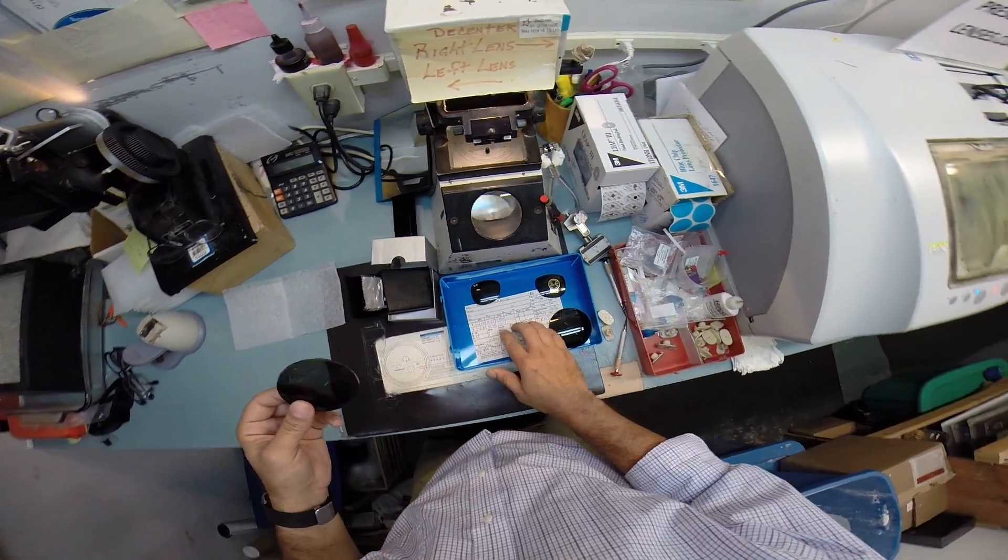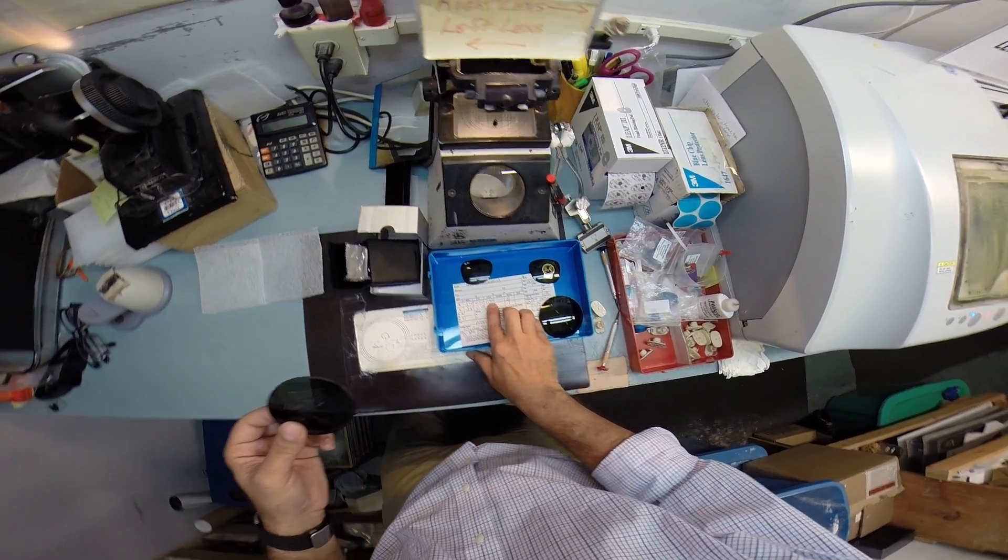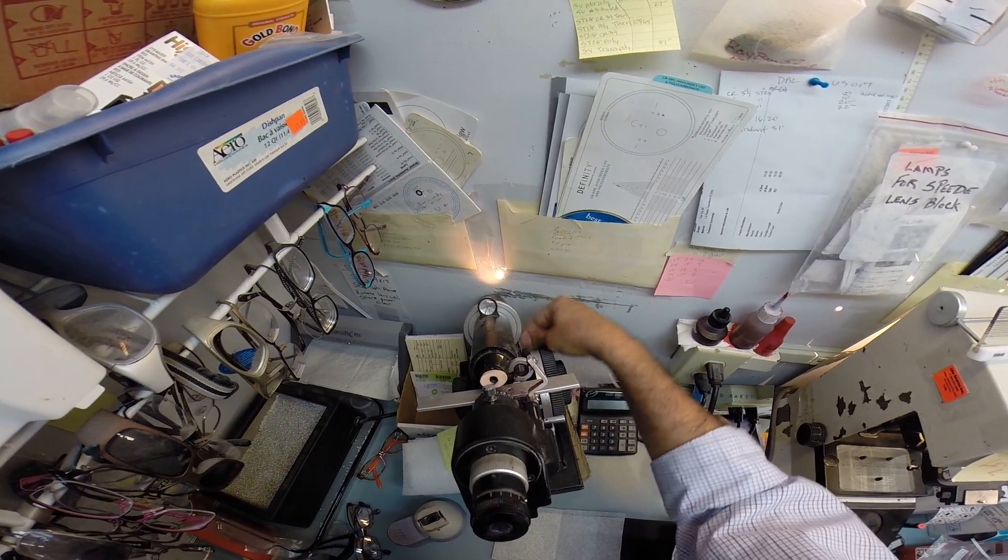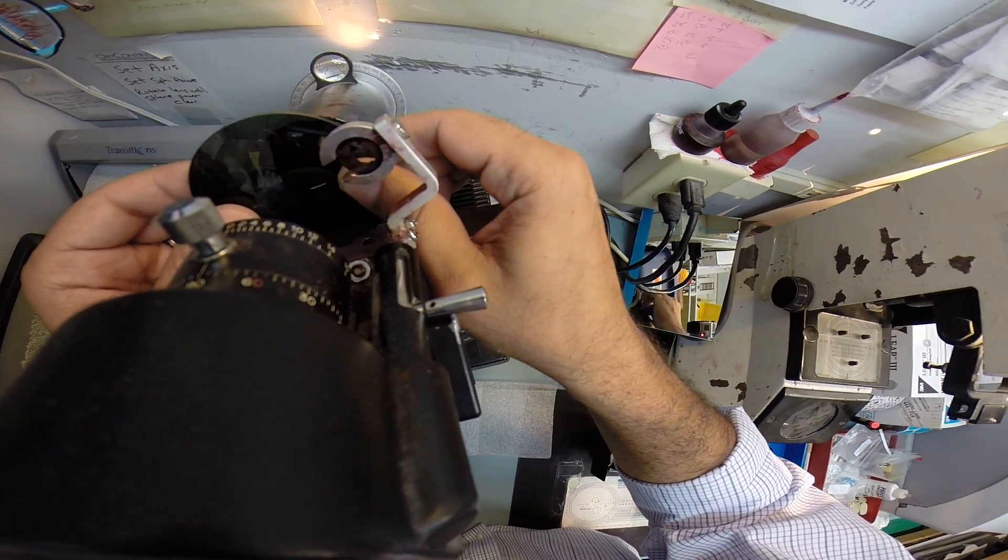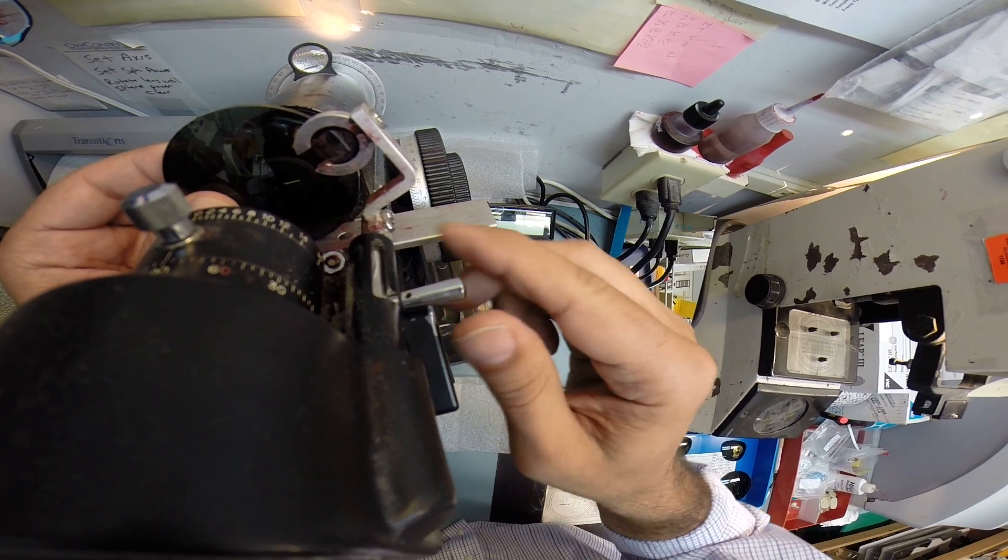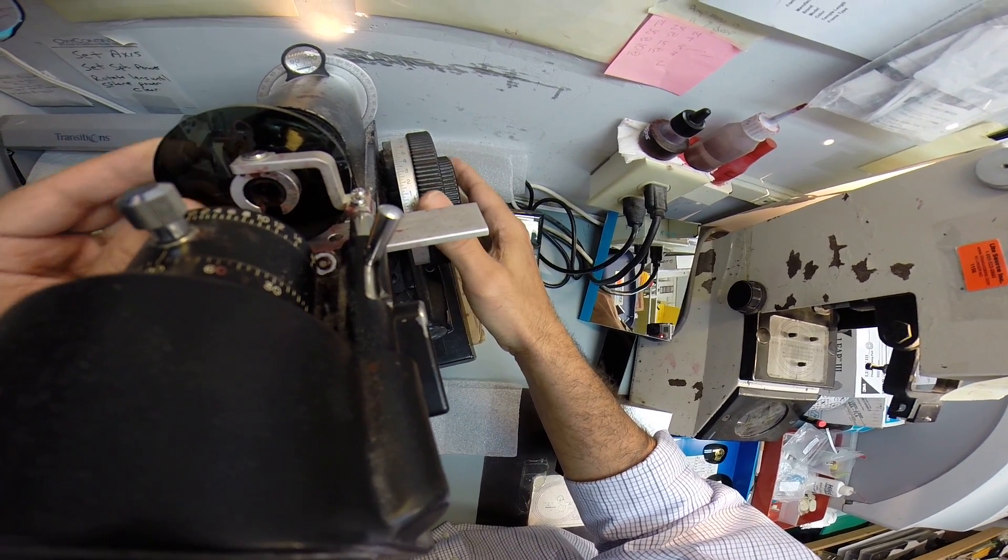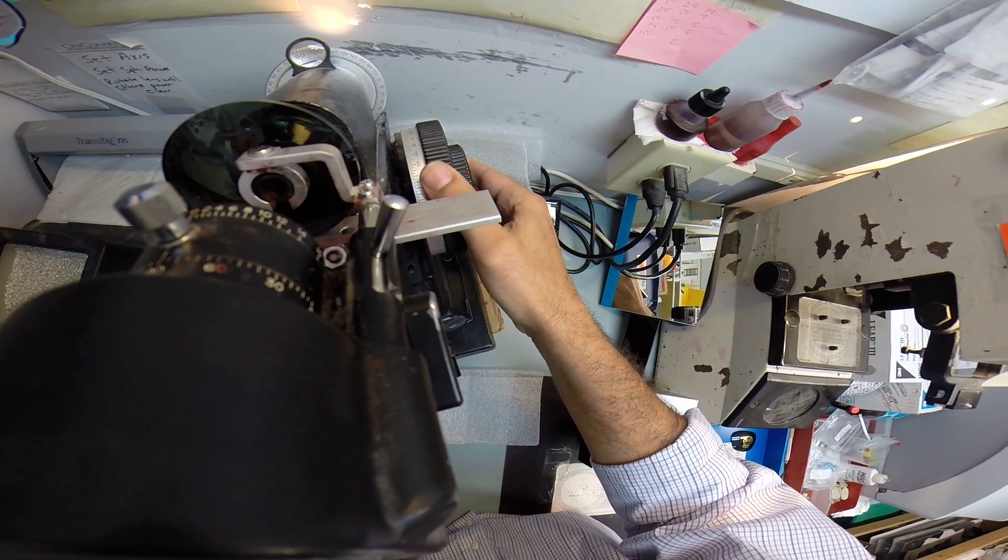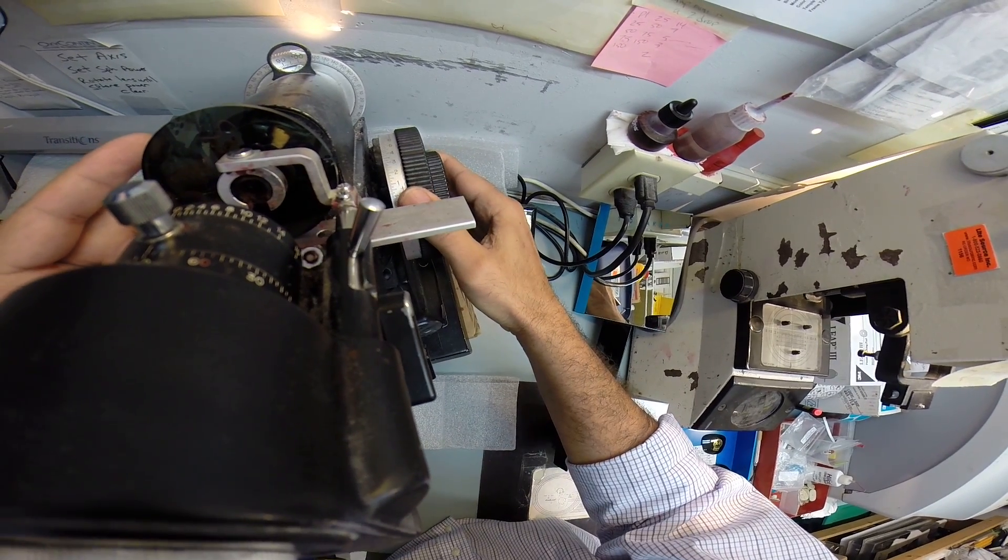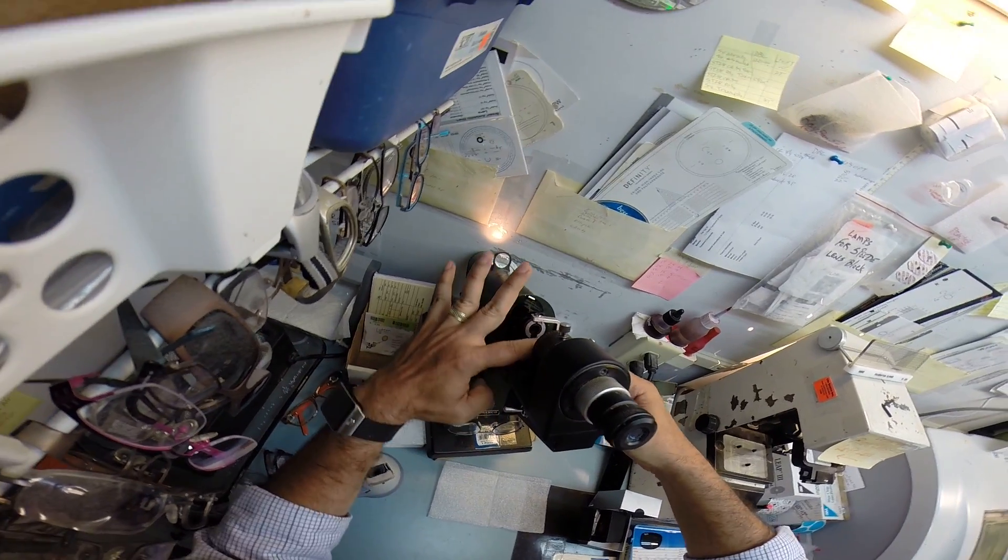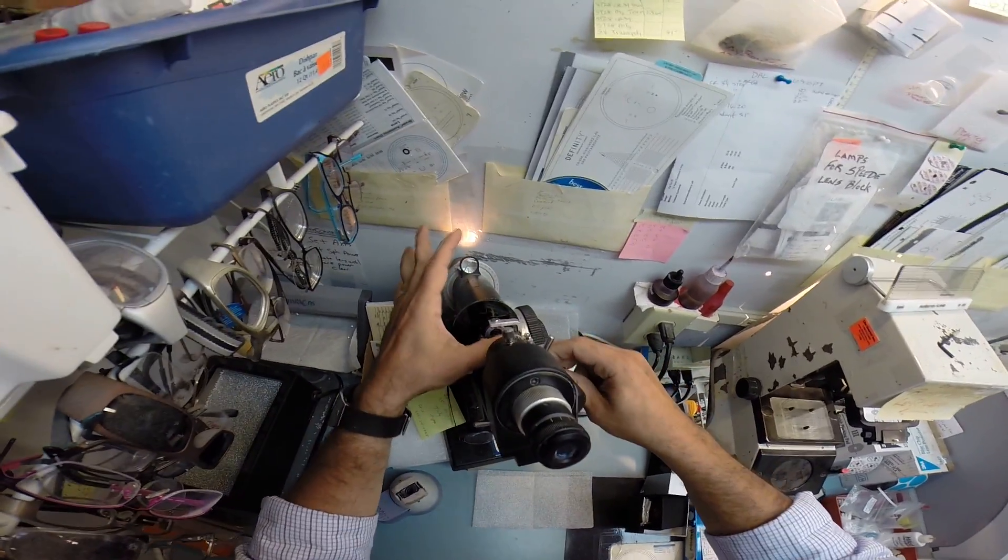So let me get your right lens ready. Your prescription reads minus 2.75, minus 0.75 at 100. So I'm going to spin the axis wheel to 100. I'm going to set the power drum at minus 2.75. I'm going to put your lens in there and rotate until the sphere power comes in clearly. And now would be a good time for you to observe how dusty the top of my lensometer is.